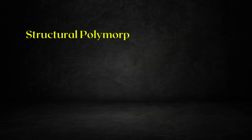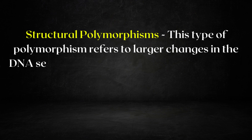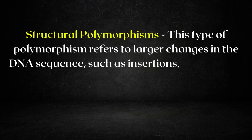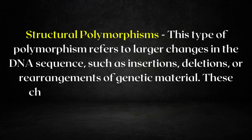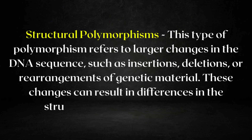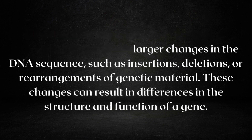The second type is structural polymorphism. This type of polymorphism refers to a larger change in the DNA sequence, such as insertions, deletions, or rearrangements of genetic material. These changes can result in differences in the structure and function of a gene.